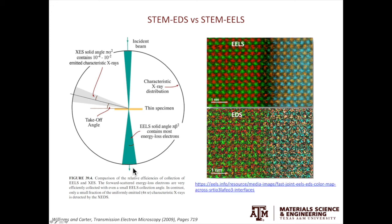Let's look at an example of STEM EELS and STEM EDS. Both are atomic-level chemical maps. It is pretty clear that the STEM EELS has better signal-to-noise ratio and better spatial resolution compared to STEM EDS.